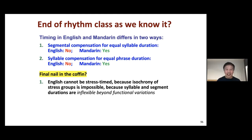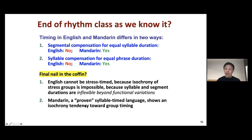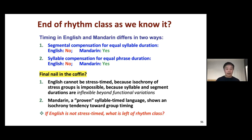English cannot be stress-timed because isochrony of stress groups is impossible — syllable and segment durations are inflexible beyond functional variations. Those flexibilities are all used up for group marking, stress, and other functions — nothing is left to do the isochrony bit. Mandarin, in contrast, a proven syllable-timed language by the rhythm metrics, shows an isochrony tendency toward group timing and also syllable timing. So if English is not stress-timed, what is left of the rhythm class hypothesis? That's a big question.